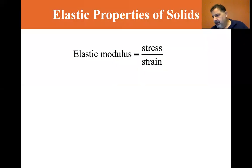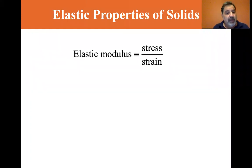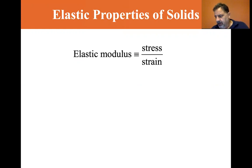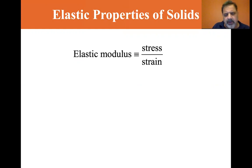We are at section 12.4, elastic properties of solids. We're going to study three different types of moduli: the Young's modulus, the Shear modulus, and the Bulk modulus. There are a few others — the Poisson ratio, for example.